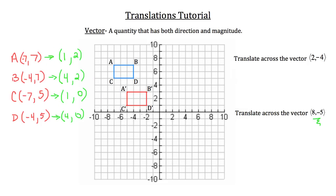A is at (1, 2), so 1 to the right and 2 up. B is at (4, 2), so 4 to the right and 2 up. C is at (1, 0), so 1 to the right right on the x-axis. And D is at (4, 0), so 4 to the right on the x-axis. Connecting the points gives us the new figure A''B''C''D''. Each point went 8 to the right and 5 down. Remember, you'll recognize a vector by its angle-bracket notation. That's how we translate figures in geometry.